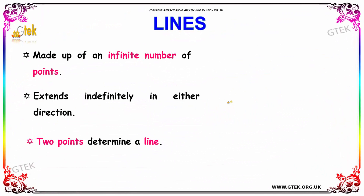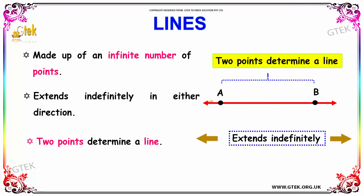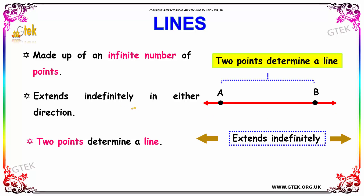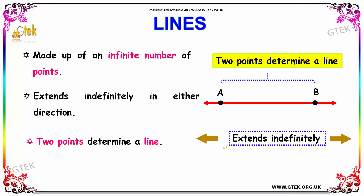Next, we are going to study about lines. A line is made up of an infinite number of points, and it extends indefinitely in either direction. Two points determine a line. Here, the two points A and B determine the line, and it extends indefinitely in either direction.